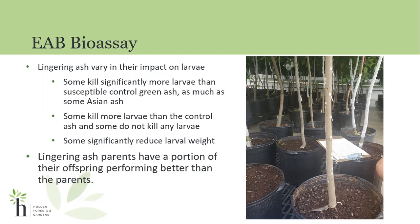Over the years, the research lab has been able to take lingering ash individuals and grow them up to maturity so that they can start crossbreeding different lingering ash individuals. They have noticed that the offspring of these crosses — some of them, not all — will end up performing better than their parents in this EAB bioassay. They've been working very hard at the Cook Lab for a long time on making sure they are able to assess specifically just how well each of these individuals and their offspring are able to fight against EAB.